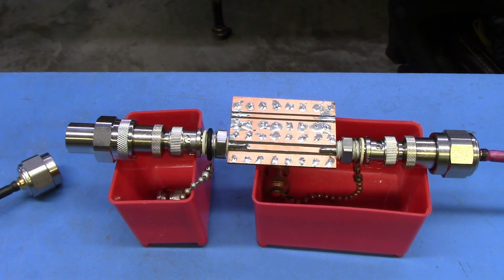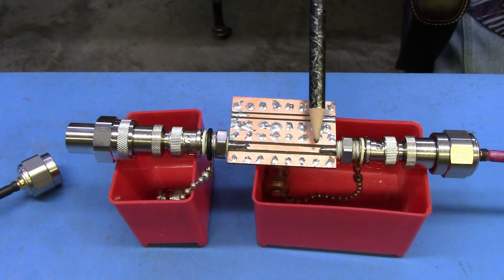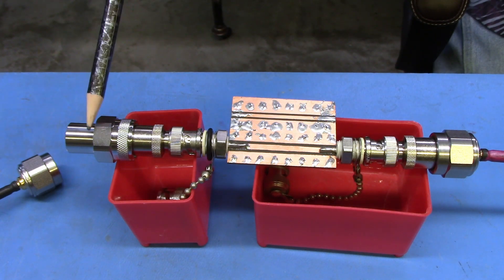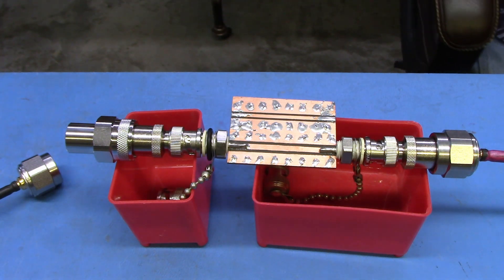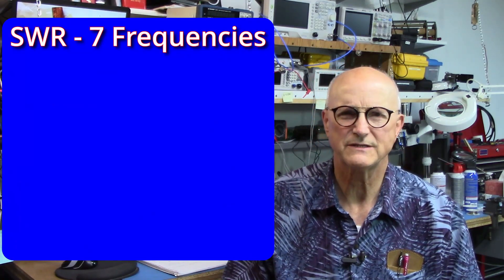Like I did before, I'm going to evaluate this from 1 megahertz to 1 gigahertz. I have port 1 of my VNA connected to one connector at one end. Then I have my calibration standard connected to the other end on the other connector. Let's see what the SWR is. As before, I made SWR measurements at seven different frequencies.